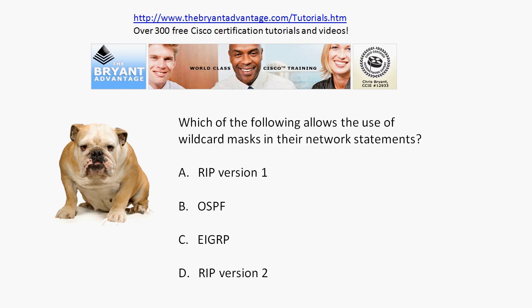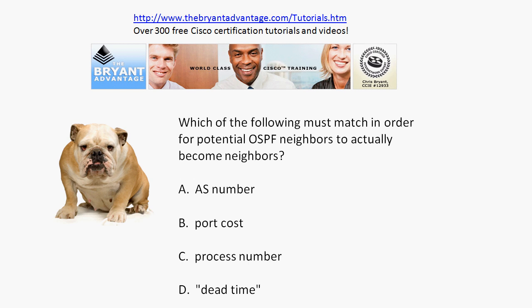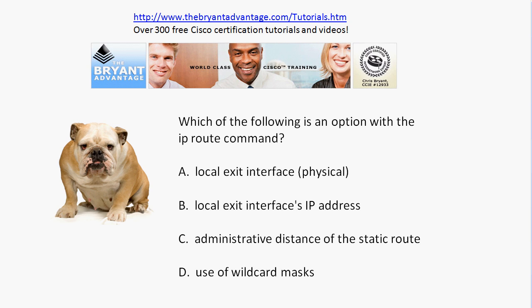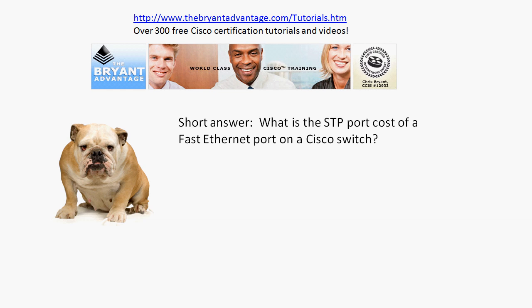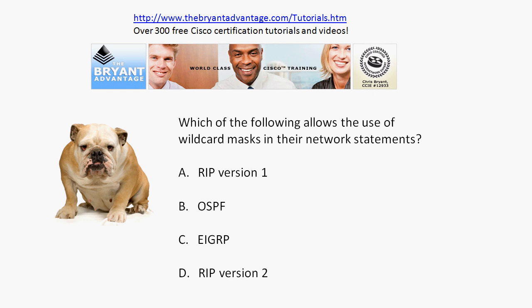Here are your questions — and with my multiple choice questions it's always 'choose all that apply.' First: which of these allows the use of a wildcard mask in the network statement? Second: which of these must match in order for potential OSPF neighbors to actually become neighbors? Third: which of these is an option with the IP route command — and as extra credit, what do we use the IP route command for? Finally, a short answer: what's the STP port cost of a FastEthernet port on a Cisco switch?